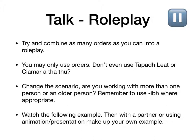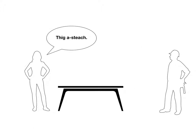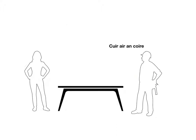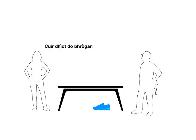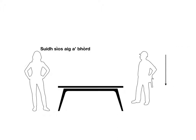So to finish it off we're going to do a wee role play. Go back to the unit and look at as many of the orders as you can. Role play them — best do this with a friend. You can only use orders — don't even use 'tapadh leat' or 'ciamar a tha thu', just use orders. You can change the scenarios: are you working with more than one person, or with an older person? Remember to use '-ibh' or '-aibh' where appropriate. Watch the following example, then with a partner or using animation make up your own example.